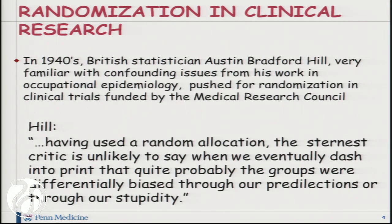And in the 1940s, British statistician Austin Bradford Hill, who had been doing a lot of observational studies for the Medical Research Council and was very familiar with the confounding issues, pushed for randomization in clinical trials that the MRC funded. A quote from Hill is: 'Having used a random allocation, the sternest critic is unlikely to say when we eventually dash into print that quite probably the groups were differentially biased through our predilections or through our stupidity.'